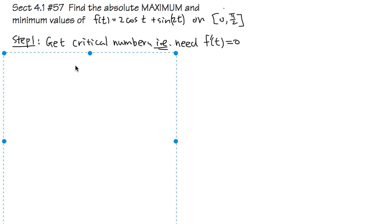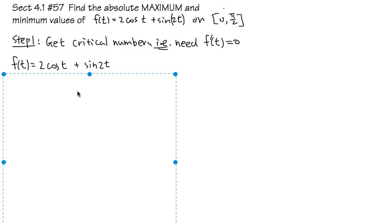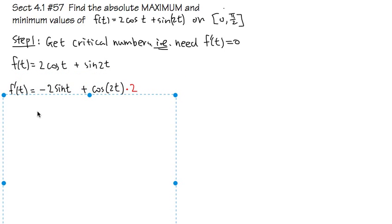Our function is 2cos(t) + sin(2t). Taking the derivative: the derivative of 2cos(t) gives negative 2sin(t). The derivative of sin(2t) gives cos(2t), and by the chain rule we multiply by the derivative of the inside, which is 2.